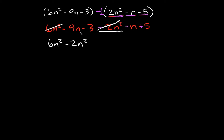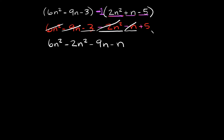Next we have negative 9n — out of the remaining terms, which one can we combine with negative 9n? Well, that would be negative n. And then lastly we have negative 3 and positive 5 — the numbers always go at the end, so negative 3 plus 5.